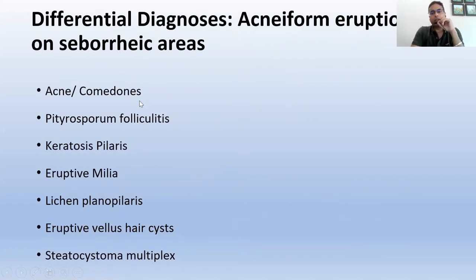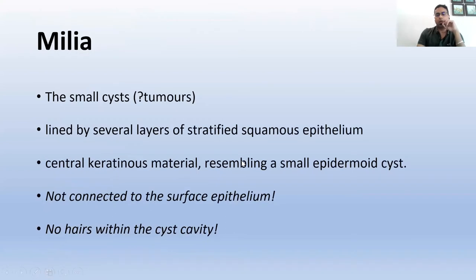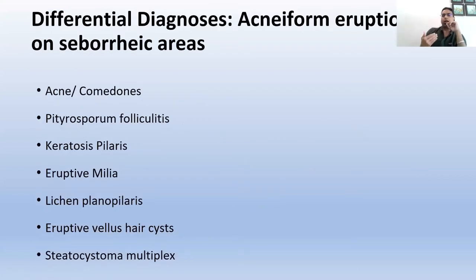The differential diagnosis for acne form eruptions on seborrheic areas includes, apart from acne: pityrosporum folliculitis, keratosis pilaris, eruptive milia, lichen planopilaris, eruptive vellus hair cysts, and steatocystoma multiplex. These are all overlapping entities, and I find it extremely difficult clinically to differentiate them, especially when you don't have typical acne lesions on the face to say this is just truncal acne. Before I go into discussing how I approach this, I'd like to describe a few entities that are not so well known, even to dermatopathologists or dermatologists.